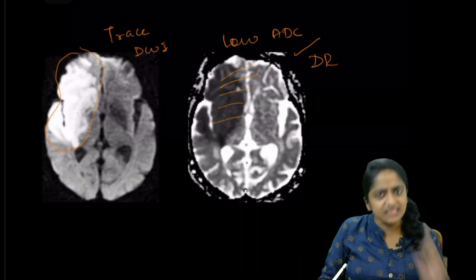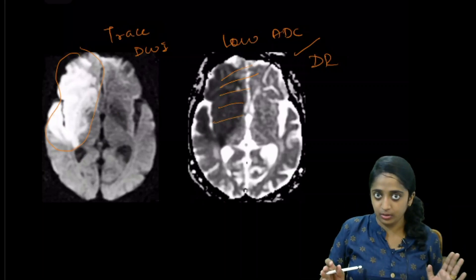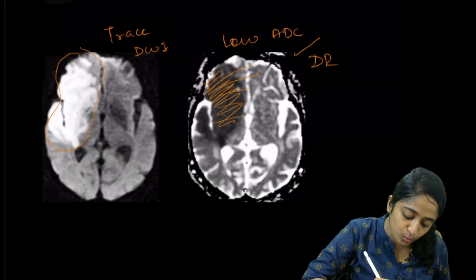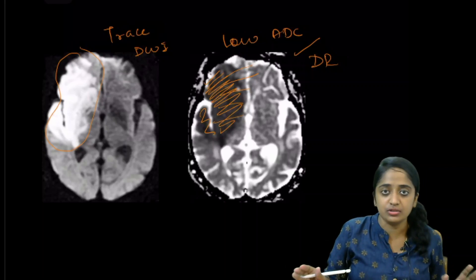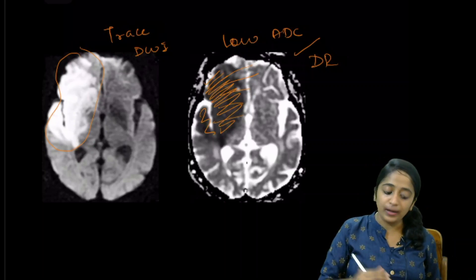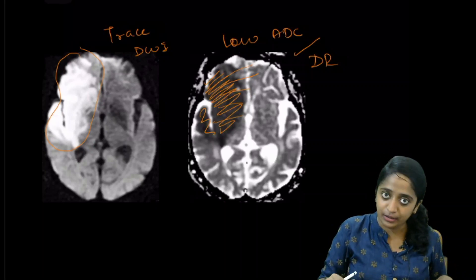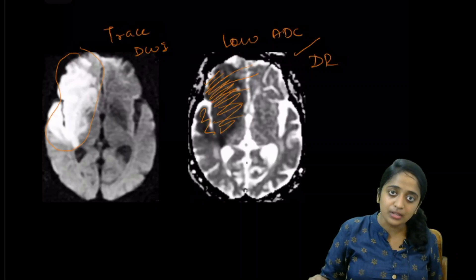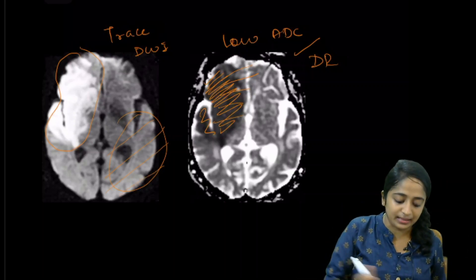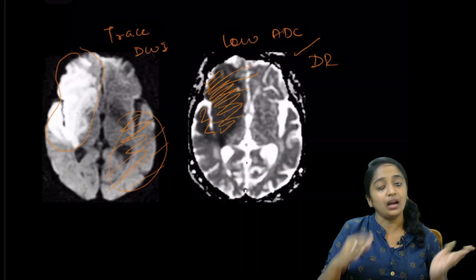The difference between diffusion restriction and T2 shine-through: the ADC map reflects only diffusion. When diffusion is restricted, the ADC map will show no signal — low signal — because restricted tissue cannot freely diffuse. The diffusion-weighted trace image, however, measures both T2 effect and diffusion. So infarcted tissue will appear bright on the trace image while normal tissue loses its signal after gradient application. This is why infarcted tissue shows bright on the trace image and low signal on the ADC map — that is true diffusion restriction.